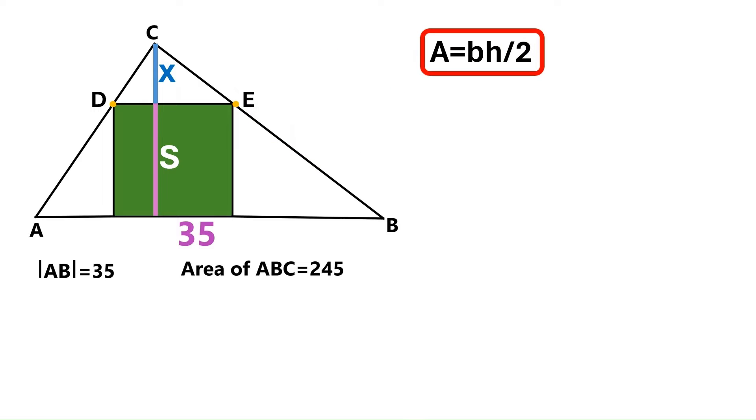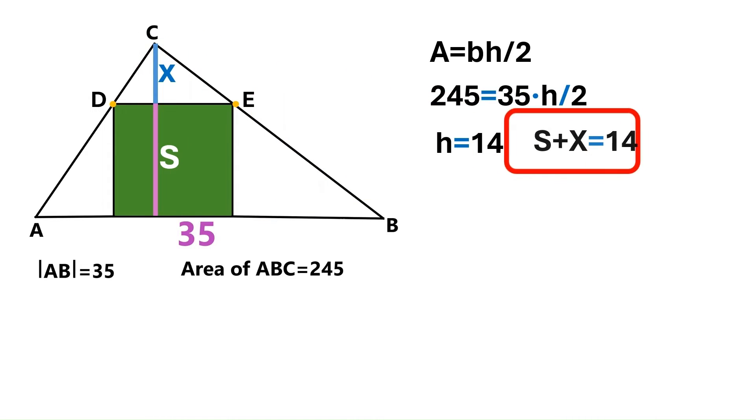The area of a triangle equals base times height divided by 2. Let's do the math and we find the height to be 14. We now know that S plus X is 14, and we're going to put that information to good use.